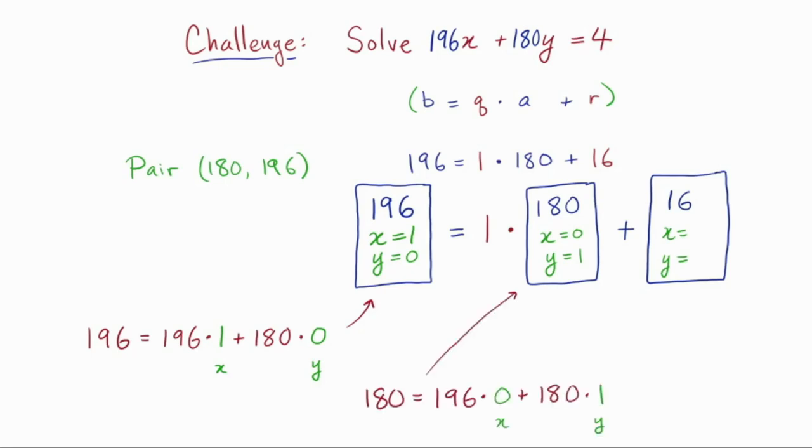The second card tells us what we need to get 180. We need x equals 0 and y equals 1. The third card tells us that we can use x equals 1 and y equals negative 1 to get 16.